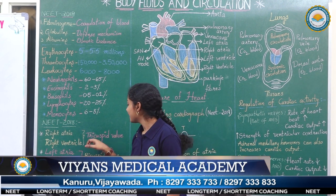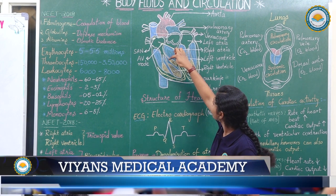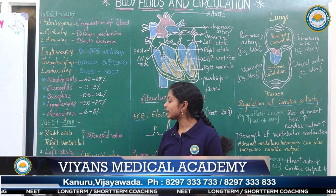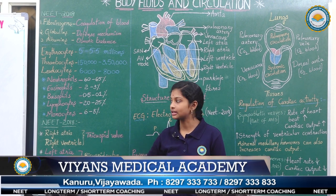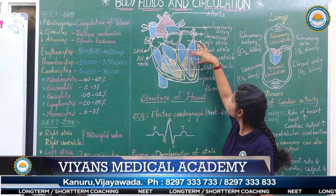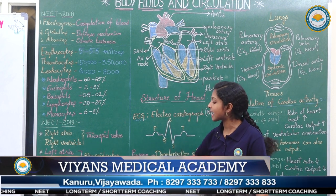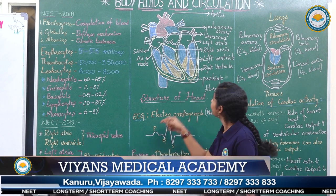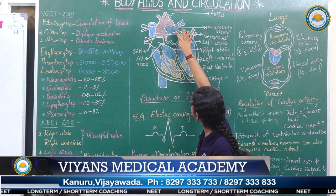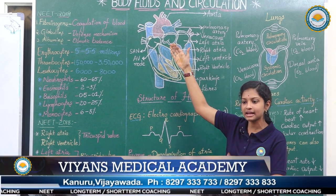The Tricuspid valve is located between the right atrium and right ventricle. The Bicuspid valve is located between the left atrium and left ventricle. The Semilunar valve is located between the ventricles and the pulmonary arteries and aorta. This ventricle opens through the pulmonary artery, and the semilunar valve is present at that junction.